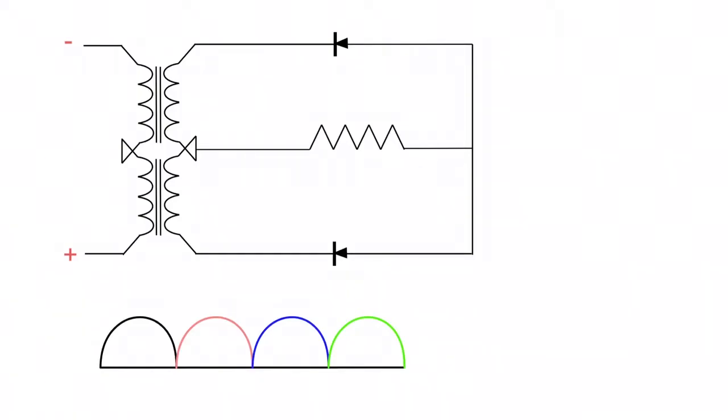In this video, we're going to be going over a center tap biphase rectifier. As we've seen in our other videos, a rectifier takes AC and converts it into a pulsating DC.